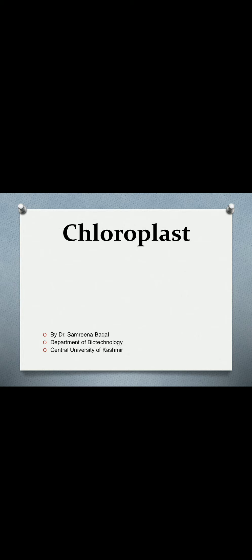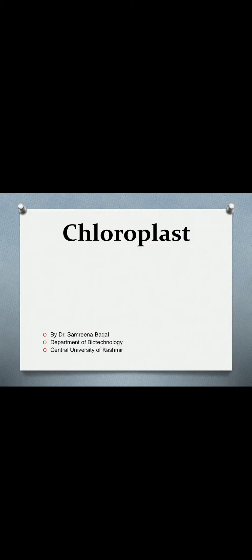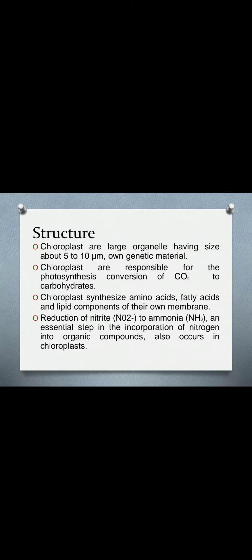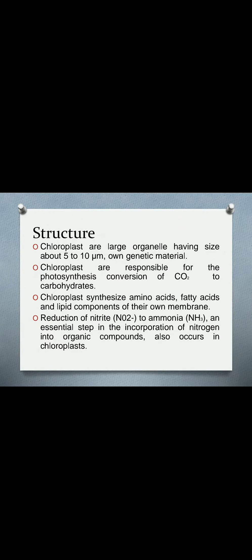Today we are going to discuss the chloroplast — its structure, function, and biogenesis. This is one of the important organelles of plants, seen only in plants and not in animals. In the chloroplast, environmental carbon dioxide is converted to carbohydrate, making it the organelle responsible for photosynthesis. The chloroplast has many similarities with the mitochondria: both have their own genome, enabling them to make many proteins and enzymes responsible for their own cell division, and both are involved in the generation of metabolic energy.